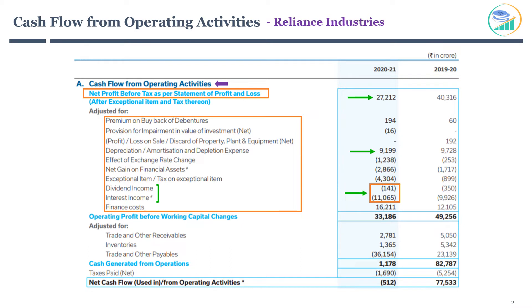The last line item is Finance Cost, which refers to interest paid on company debt. This expense is actually related to financing activities. Remember, we started with Profit Before Tax, which is calculated by subtracting expenses related to finance cost. As interest expenses are related to financing activities, it is added back to the operating cash flow. However, you will notice that this finance cost is deducted later from financing activities.